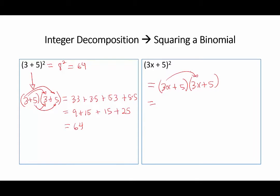3x times 3x is 9x squared. 3x times 5 is 15x. This times this is 15x. And this times this is 25. We combine like terms, and we have that this is 9x squared, plus 30x, plus 25.